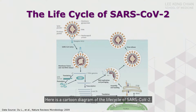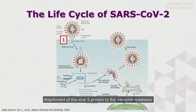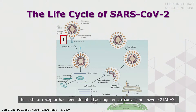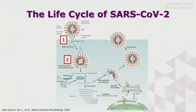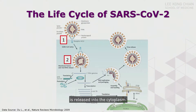Here is a cartoon diagram of the life cycle of SARS-CoV-2. The first step is entry. Attachment of the virus S protein to the receptor mediates endocytosis of the virus into the host cell. The cellular receptor has been identified as angiotensin-converting enzyme 2, ACE2. Within the endosome, the virus membrane will fuse with the endosome membrane, and the positive-sense RNA genome is released into the cytoplasm.